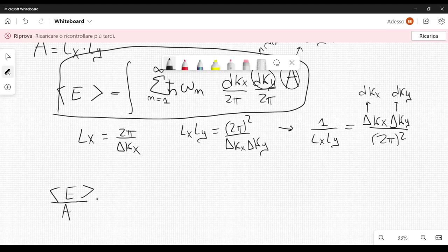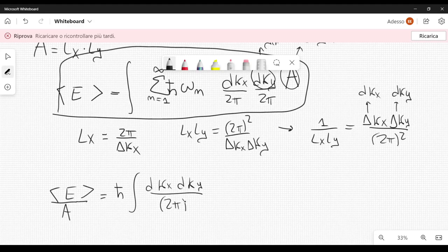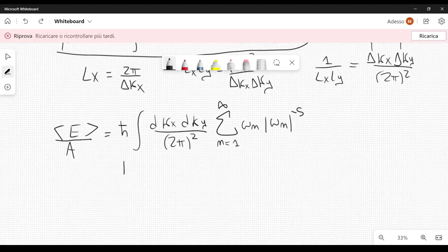So, what we are going to consider is, e divided by a, and this is h-bar integral dkx dky, divided by 2 pi squared. Then, here we have the sum, from 1 to infinity, of omega n, and then we multiply this by the absolute value of omega n, raised to the power of minus s. So, this is what we are simply adding here. In the end, the limit s goes to 0 will be taken, and s is just a complex number here.